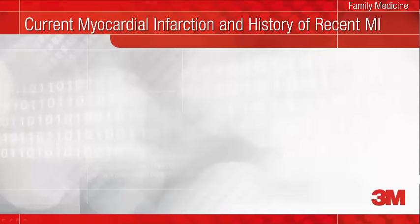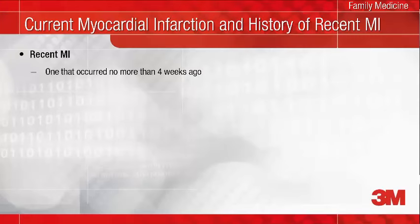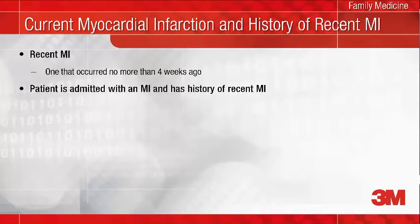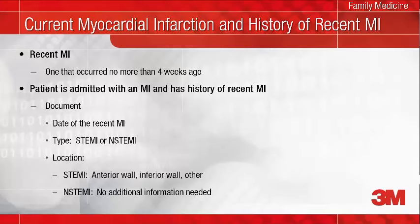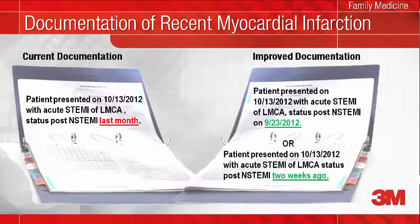Unique ICD-10 codes are used to identify patients who present with an MI that is occurring within four weeks of a previous MI. When a patient is admitted with an MI and the patient has a history of a recent MI, document the date of the recent MI, the type as either STEMI or non-STEMI, and in the case of STEMI, the wall of the heart that is affected. In this example, the patient presented with an acute STEMI of the LMCA and also had a history of non-STEMI last month. Improved documentation includes either the exact date of the previous non-STEMI or the number of weeks since it occurred.